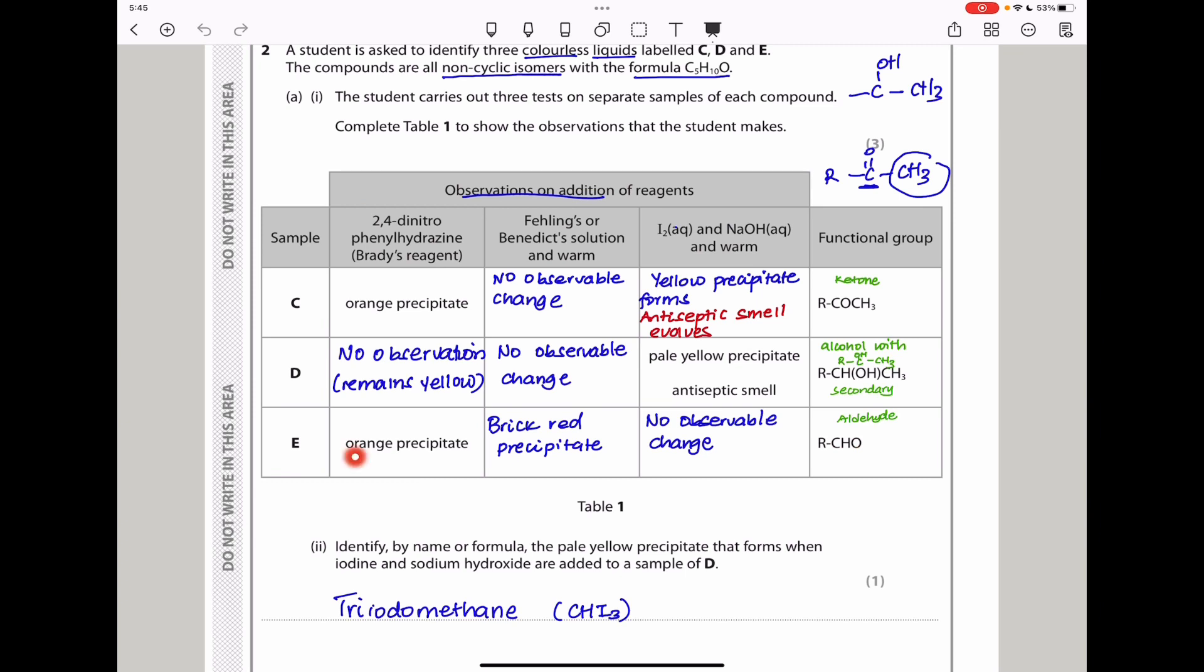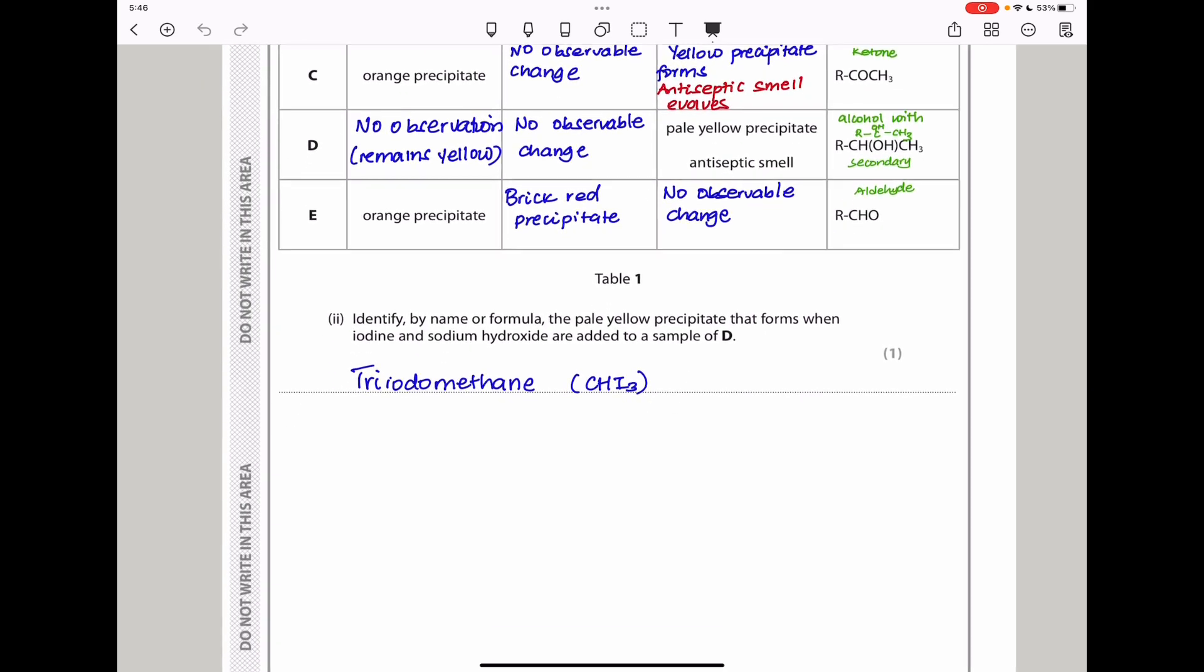Moving on to E. E here is an aldehyde, so it should give a positive test with Brady's reagent. And because it's an aldehyde, it also gives a positive test with this. So the brick red precipitate is going to be formed. And because it has no terminal methyl group, we can see there was no observable change with the iodine in the presence of sodium hydroxide. So that is how you would fill the table.